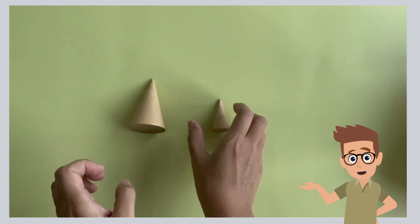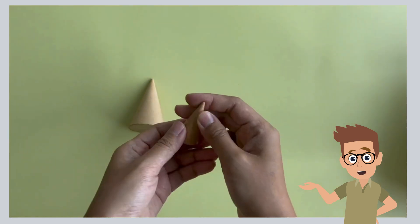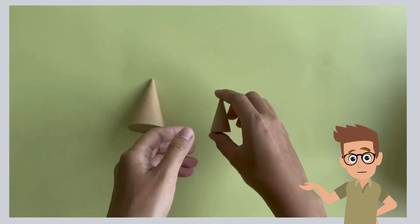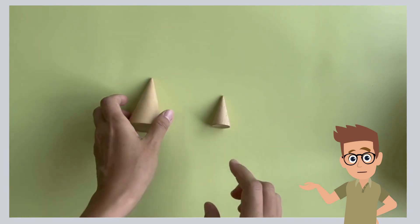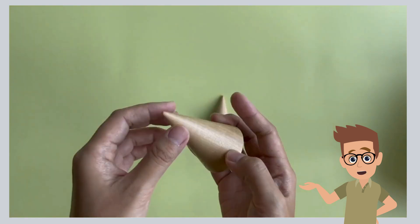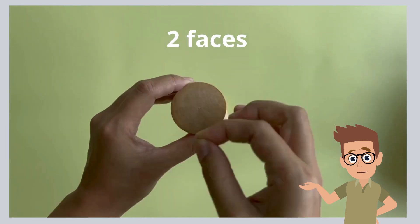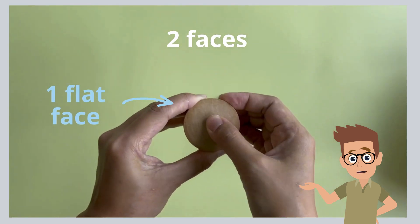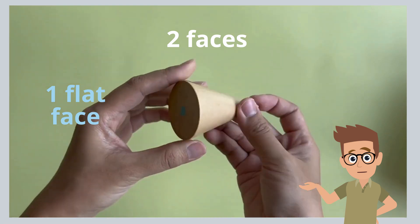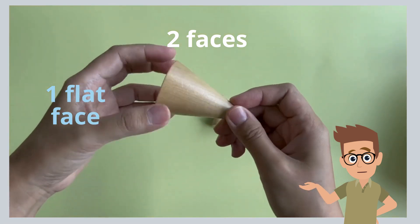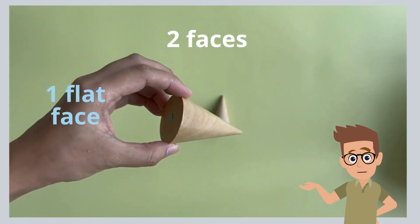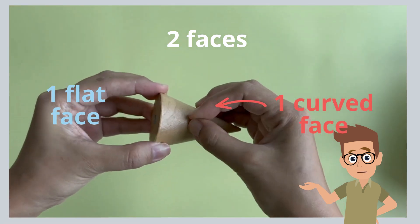How many faces does a cone have? A cone has two faces: one flat face and one curved face.